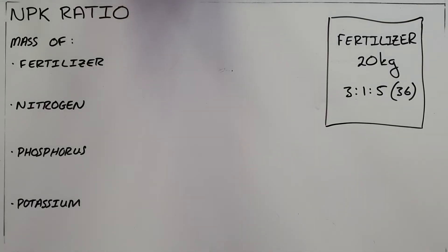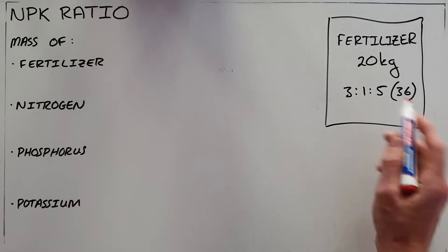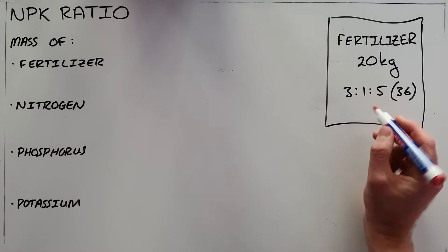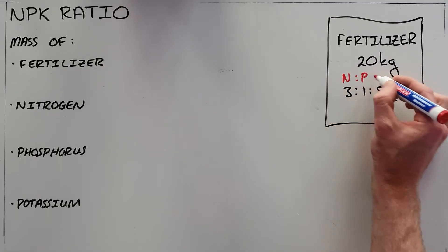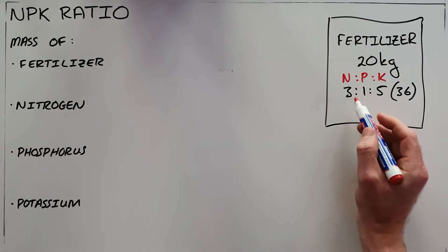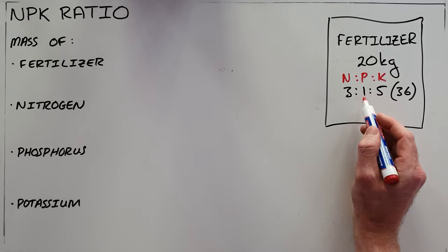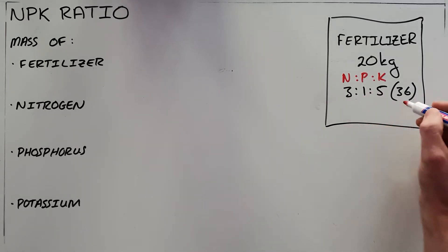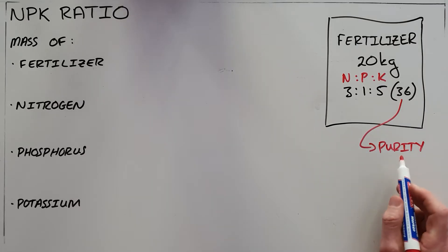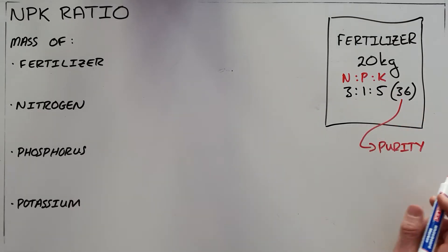The NPK ratio in a fertilizer gives us an indication of the ratio in which the primary nutrients are present in a bag of fertilizer. A typical bag of fertilizer gives you the mass of fertilizer and then this ratio, which we know to be the NPK ratio. This tells us that the ratio is three parts nitrogen, one part phosphorus, and five parts potassium. This percentage figure refers to the percentage purity, which helps us understand that this bag is not entirely fertilizer.